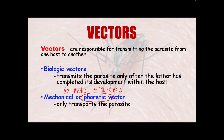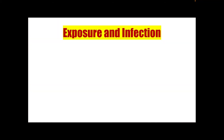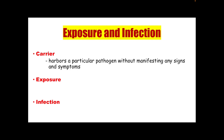Next, we have exposure and infection. We have several terms here: carrier, exposure, and infection. When we say carrier, they harbor a particular pathogen without manifesting any signs and symptoms. That means they are hosts that carry the parasite but do not exhibit signs and symptoms of disease. The disadvantage of being a carrier is that you might pass on the infection to another individual without knowing it, because you don't show signs of infection.